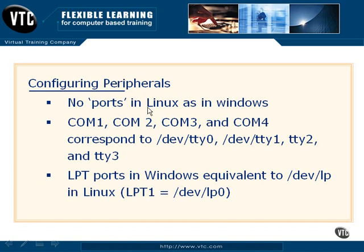Instead, we generally have files that are used to represent the functionality of peripheral devices. In the example that we have here, we have COM port 1, 2, 3, and 4, which are generally reserved for serial ports 1 and 2 in a Windows environment. So instead, we actually have TTY, or Terminal 0, Terminal 1, Terminal 2, and Terminal 3 representing their respective COM ports. When we would normally configure an application to use COM 1 or configure a serial device, we would configure it using the path as shown here.